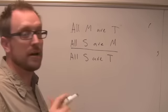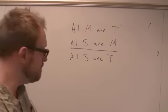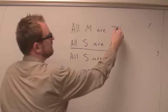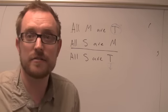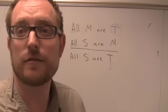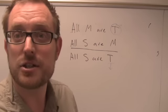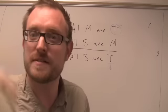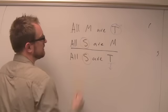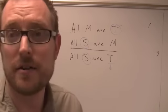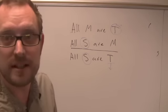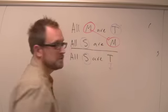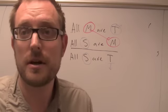We look at the conclusion to determine what the major term is — the major term is the predicate. In this case it's the idea of mortality, which occurs in the very first line of the argument. That's necessary for all standard form categorical syllogisms: the predicate term occurs in the first line, and the minor term occurs in the second line. Hence major is first, minor is second. The middle term — conveniently 'M' in this case — is the term that only appears in the premises. So this is a standard form categorical syllogism.